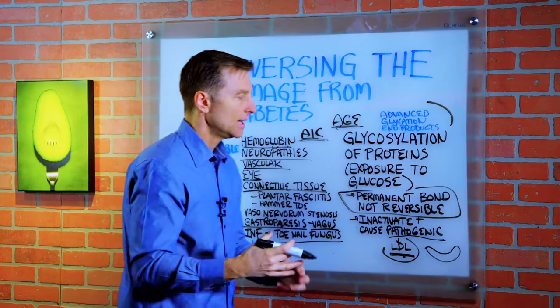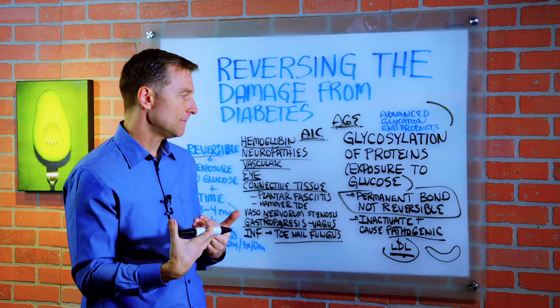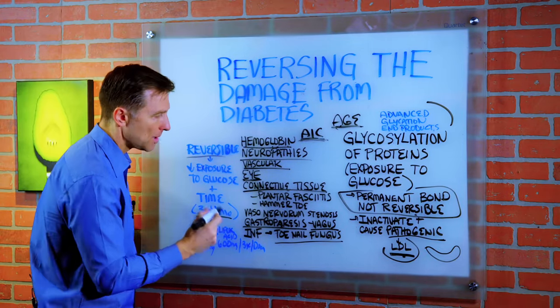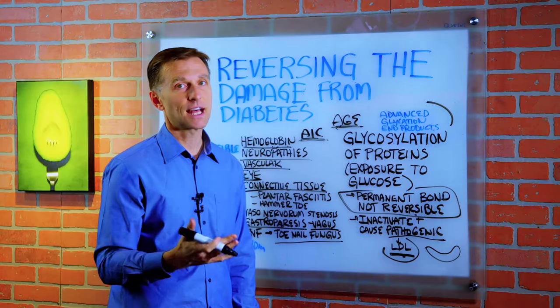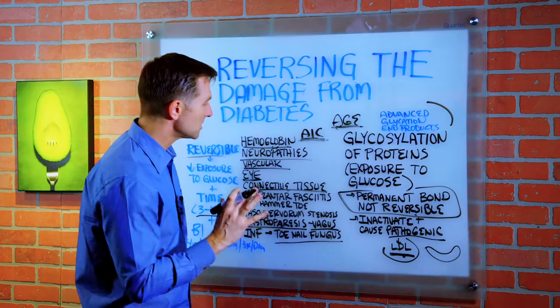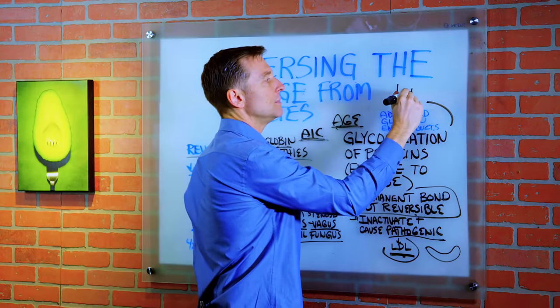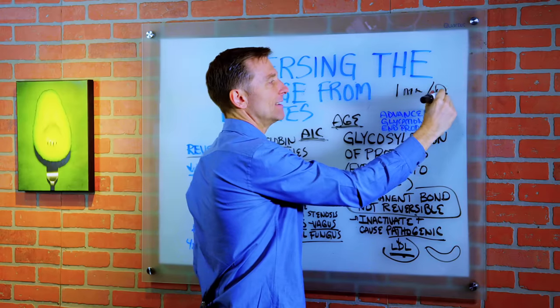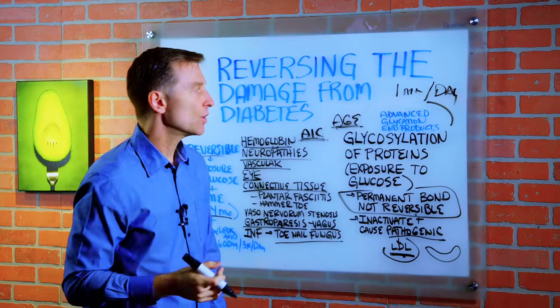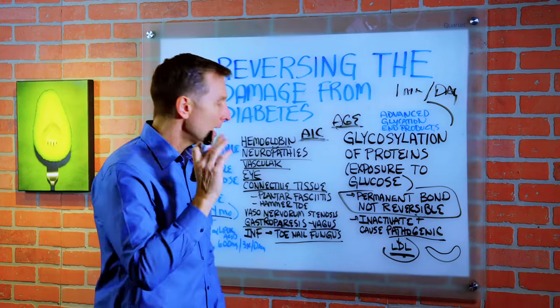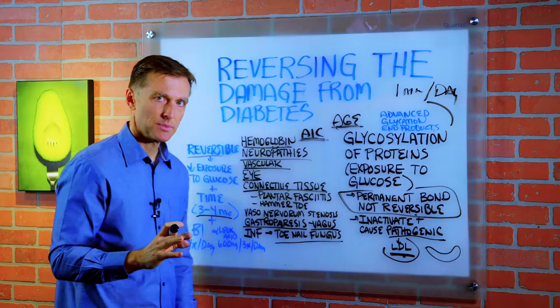The problem is that the damage already in your body doesn't just disappear — we have to give it time for those tissues to regenerate and replace themselves. That could take three to four months for a lot of tissues, but some can take a lot longer, especially parts of the nervous system, because nerves only grow by one millimeter per day. So it could take several years to get those nerves back. However, there are some things that can speed up the process.